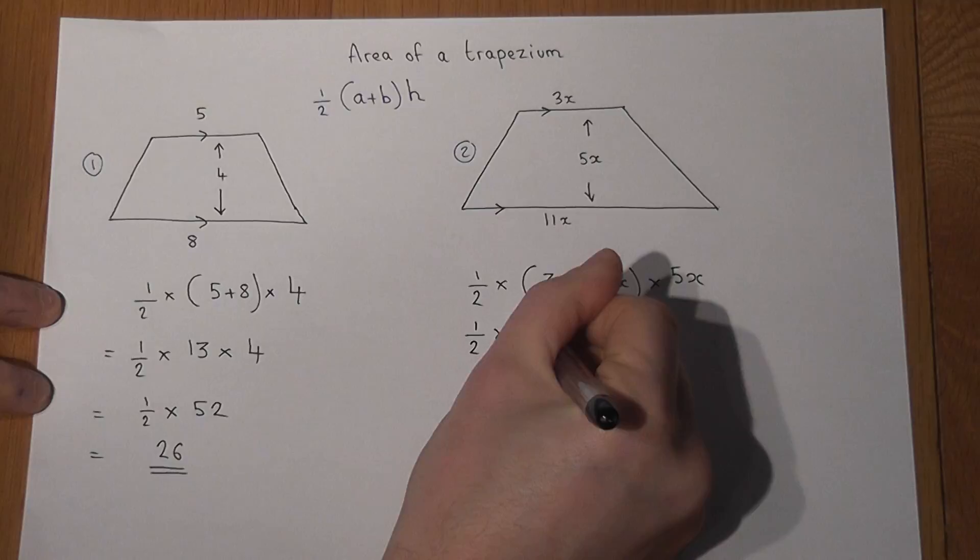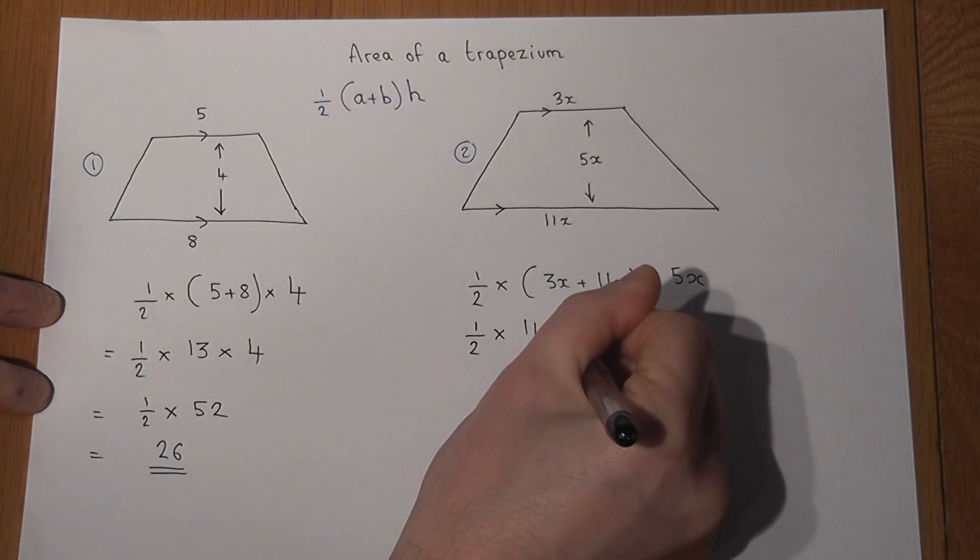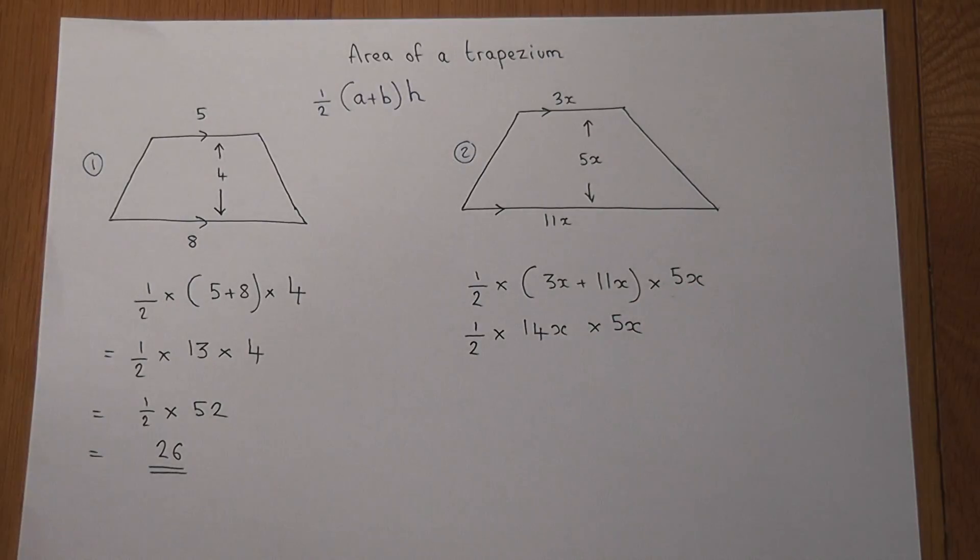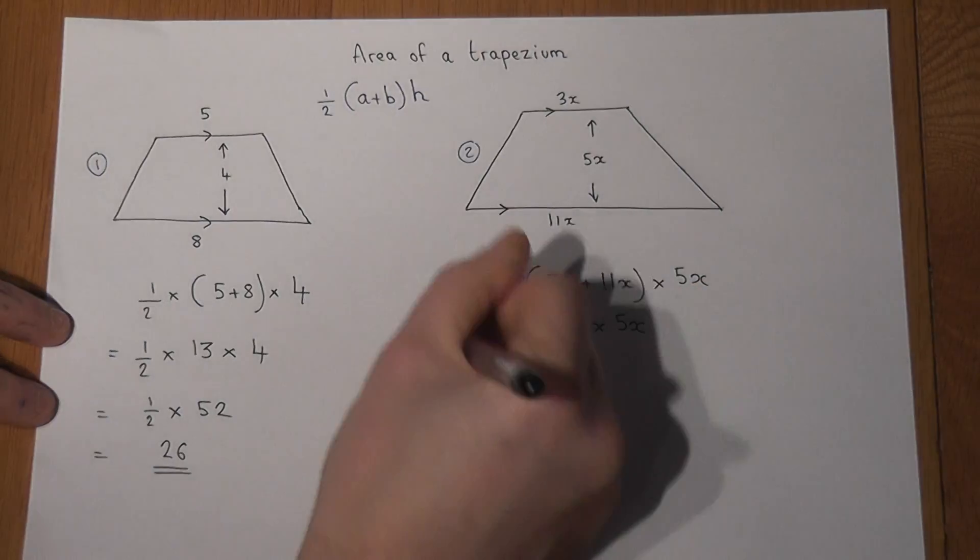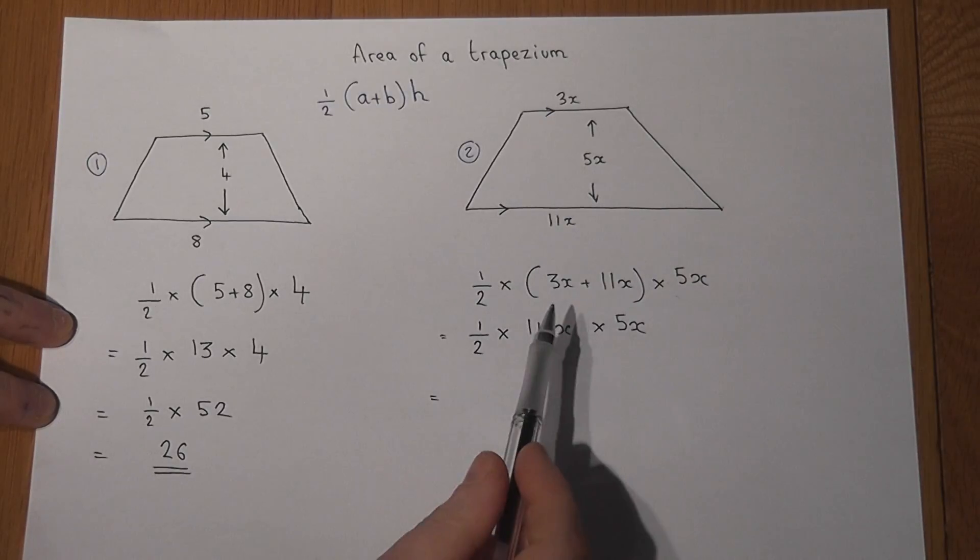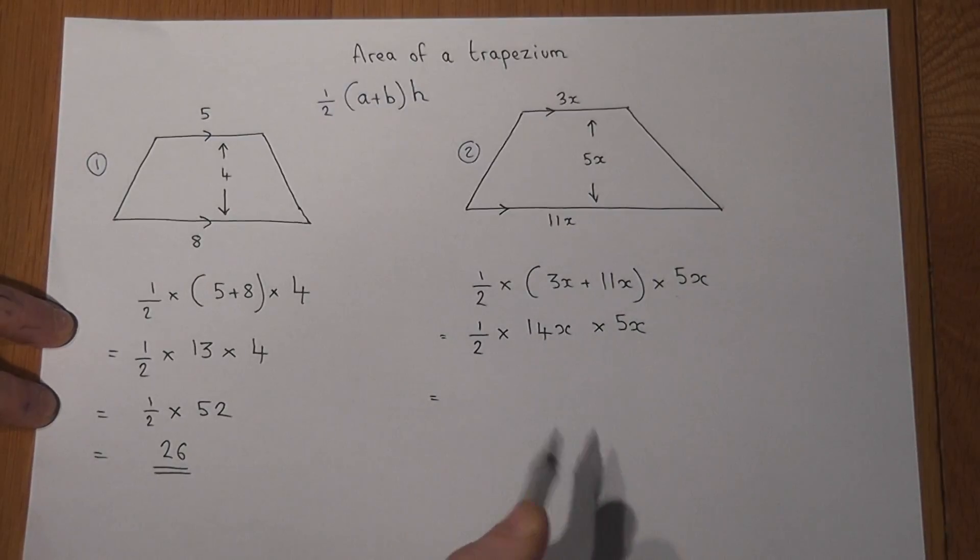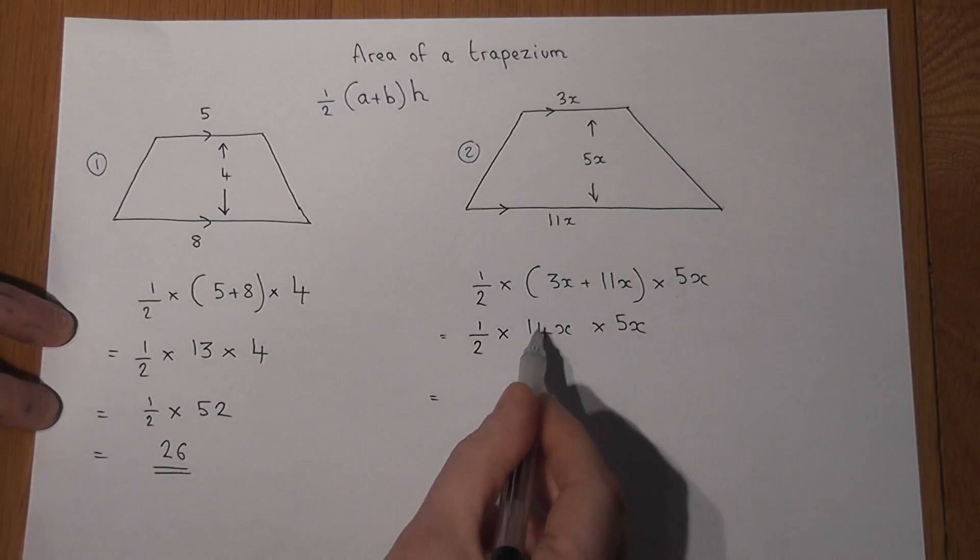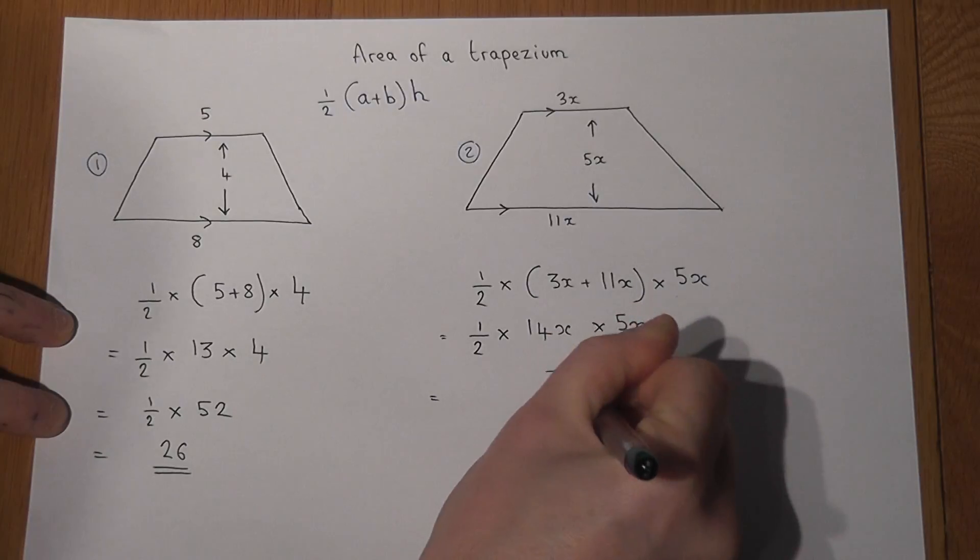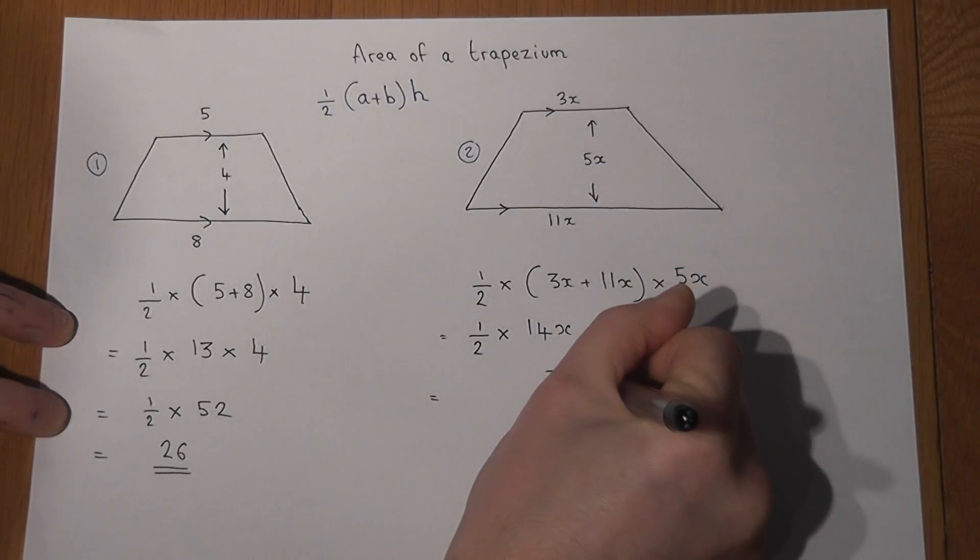Times by the 5x. There's two options there: we can halve it straight away or do the times first. So 14 times 5 is 70, and x times x is x squared.